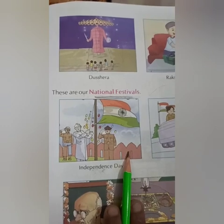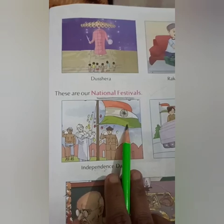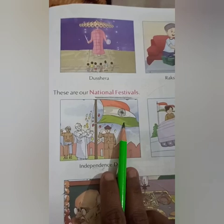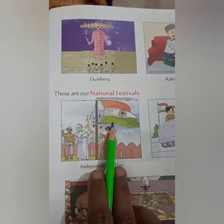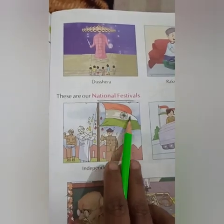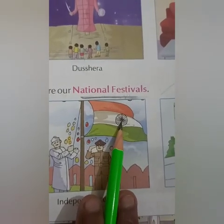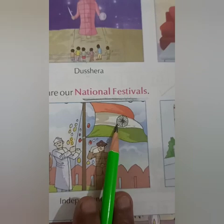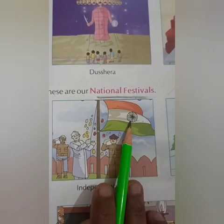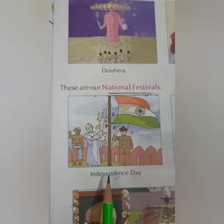That's why we celebrate Independence Day. The Prime Minister of our country hoists the national flag at Red Fort — Red Fort means Lal Qila. Here the Prime Minister is hoisting the national flag. There are three colours in our national flag: saffron, white, and green. And there is an Ashoka Chakra, which has 24 spokes in it. Independence Day is also celebrated in schools.